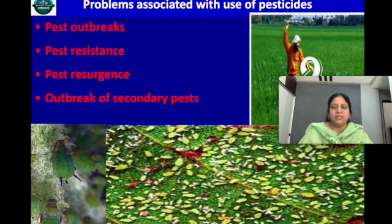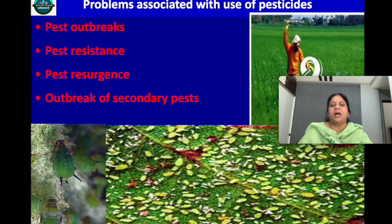Pests are developing resistance at the genetic level — that is another problem pesticides are creating. Then there is pest resurgence, where the pest is reappearing, and the outbreak of secondary pests. Pests which were very minor in earlier days are becoming major pests nowadays.